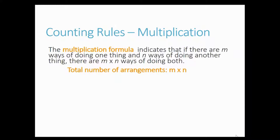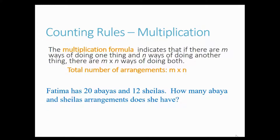The formula is m times n. For example, Fatima has 20 abayas and 12 shaylas — how many different outfits can she have? She can only wear one abaya and one shayla at a time, so we multiply 20 times 12, which gives Fatima a total of 240 different outfit arrangements.